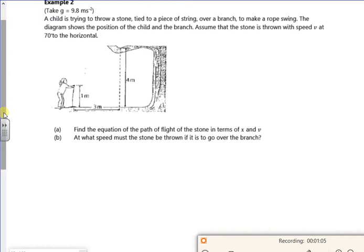So we're throwing a stone, and it's tied to a piece of string, so you're chucking it over the branch to make a rope swing. That's fair enough, isn't it? This might mess with your head a little bit. The speed is V, like that. So U is V, so that's going to mess with you.